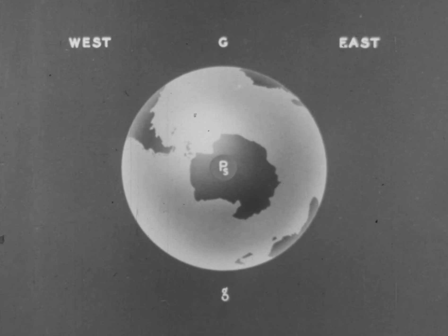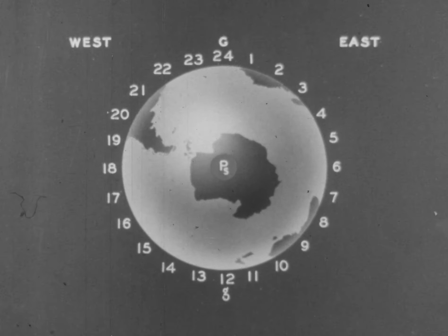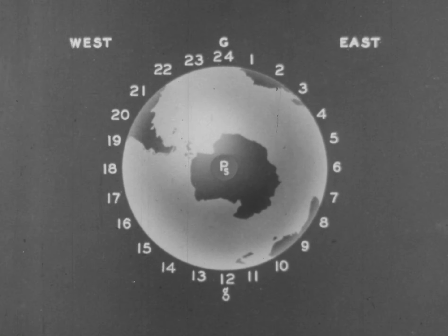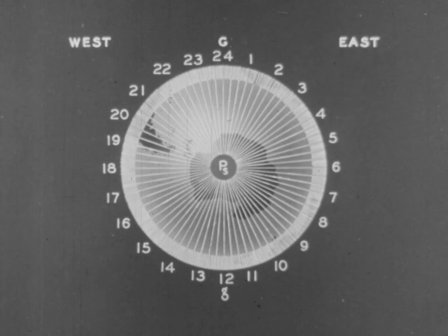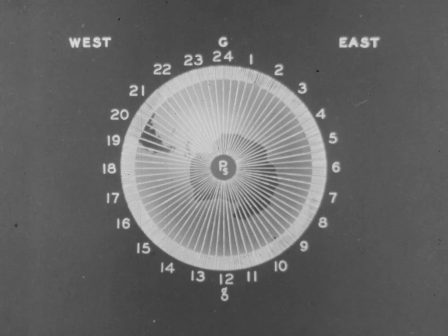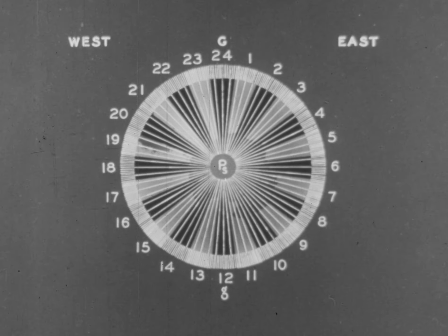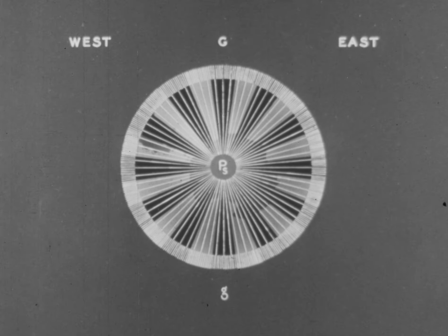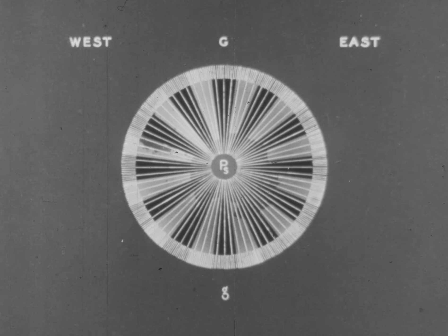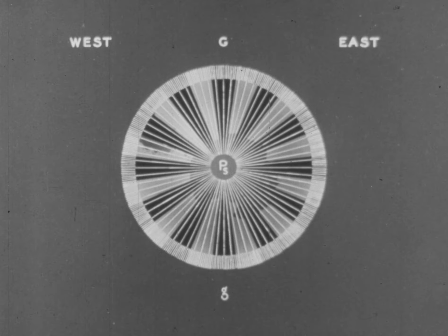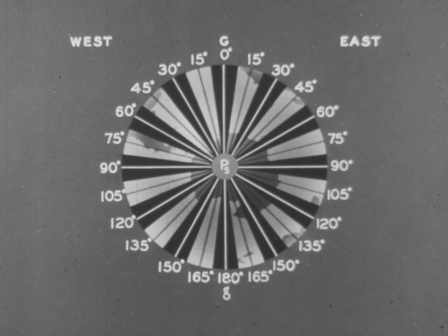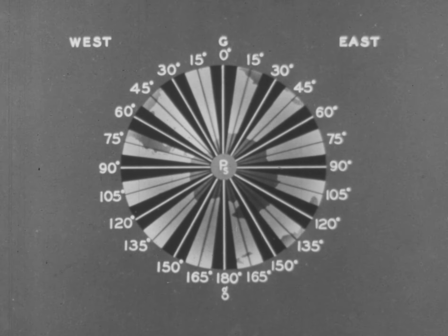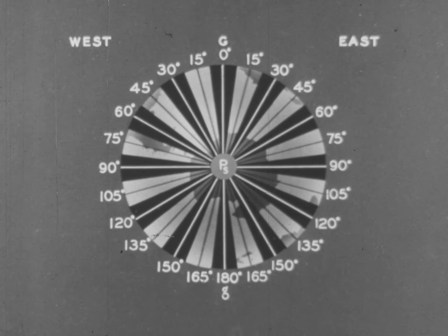Time zones are based on the fact that there are 24 hours in a day and the distance around the world is 360 degrees. Therefore, the circumference of the earth has been divided into 24 bands, 15 degrees in width. These 15-degree bands are the zones. The central meridians of the various zones are those meridians east or west which are integral multiples of 15 degrees.